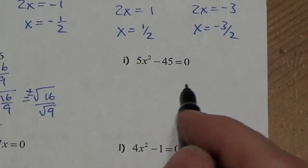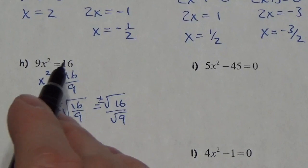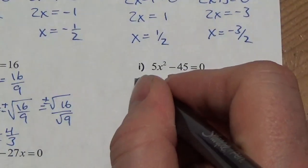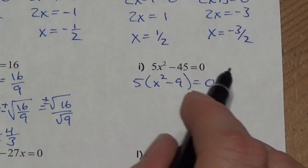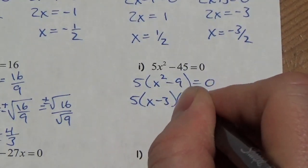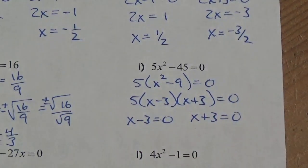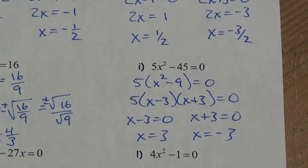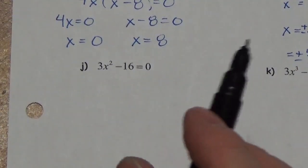This one is similar — 5x² - 45 = 0 — except the constant has been moved over. I'll factor out the 5, giving 5(x² - 9) = 0. Now I have a difference of squares: x² - 9 = (x - 3)(x + 3). So either x - 3 = 0 or x + 3 = 0, giving x = 3 or x = -3.